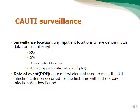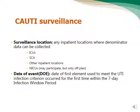CAUTI surveillance is done in inpatient locations: different ICUs, specialty care areas, and inpatient wards. It cannot be done in outpatient locations, including ER, OR, outpatient OR, or outpatient clinics. Classically, CAUTI surveillance can be done in neonatal ICU, but indwelling urinary catheters are rarely used in neonates, so CAUTI surveillance is practically not done in neonatal ICU.